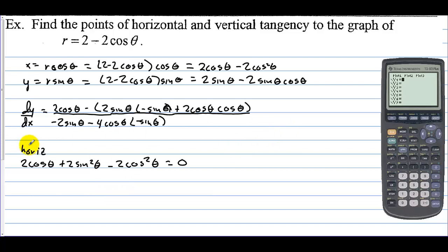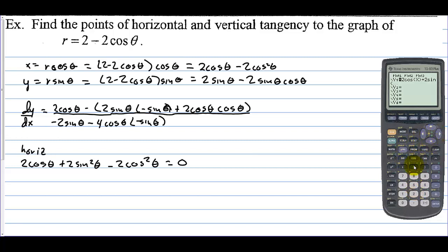Let's use the calculator to find when this equation equals 0. We go back to function mode, and in y equals we put 2 cosine of x plus 2 sine squared of x minus 2 cosine squared of x. We're going from 0 to 2 pi, so on the window we set x from 0 to 2 pi, and graph this.